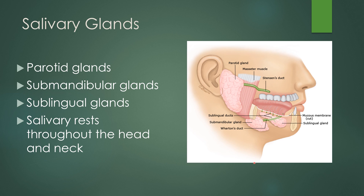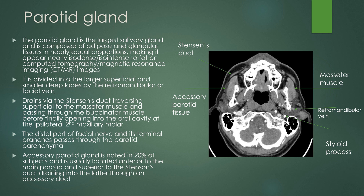Here is a schematic of the different salivary glands. The parotid gland is the largest salivary gland and is composed of adipose and glandular tissues in nearly equal proportions. On CT it appears isodense to fat, and on MRI it appears isointense to fat. It's divided into superficial and deep lobes by the retromandibular vein, which courses through it. The parotid glands drain via Stenson's ducts, which traverses superficial to the masseter muscle and passes through the buccinator muscle before it opens into the oral cavity at the second maxillary molar.